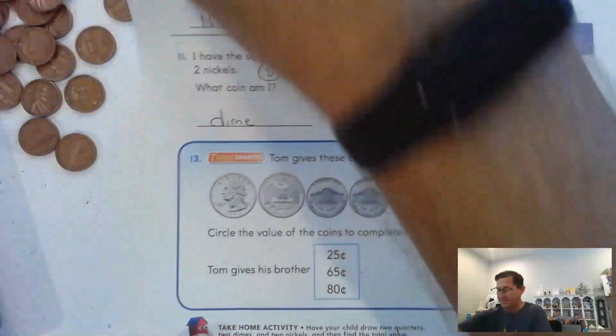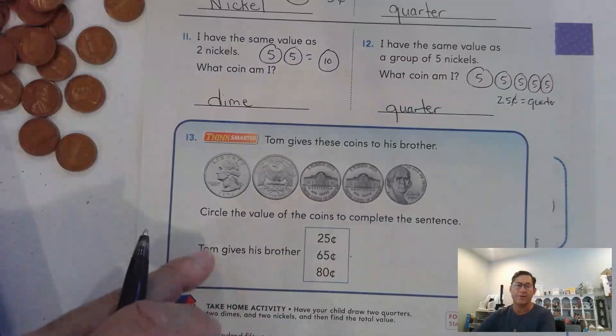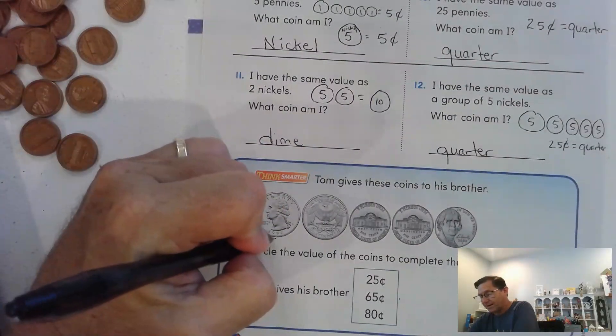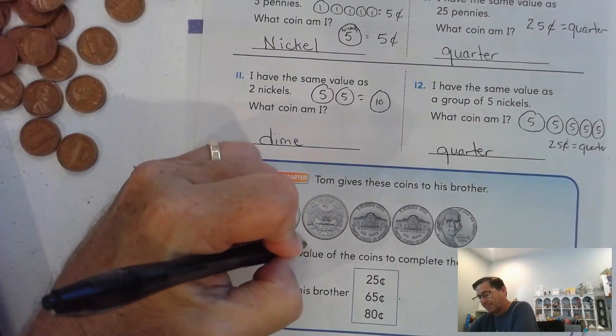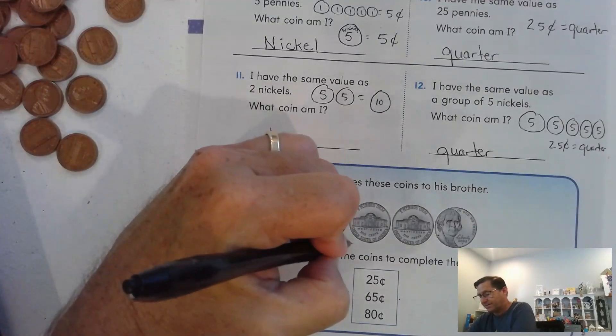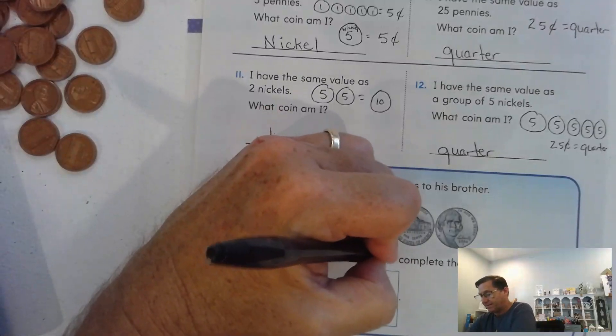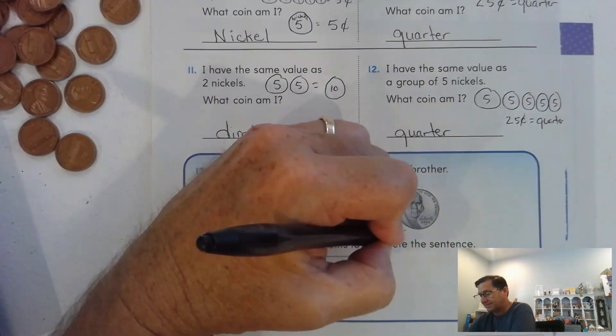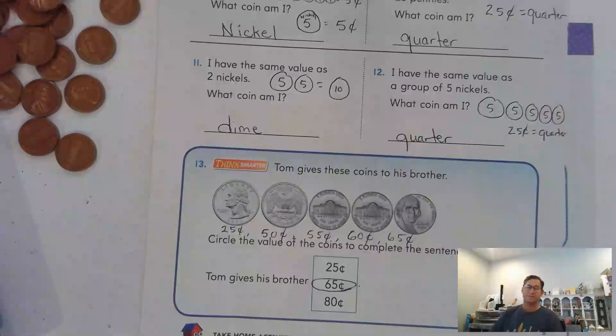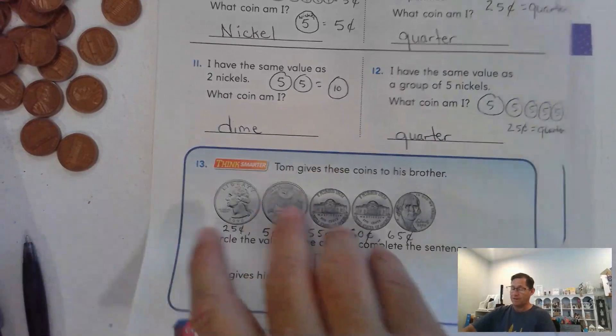And number 13. Tom gives these coins to his brother. Circle the value of the coins to complete the sentence. We have 25 cents. Two quarters is 50 cents. 50 and 5 is 55. 55 and 5 is 60 cents. And 60 and 5 is 65 cents. So Tom gives his brother 65 cents.